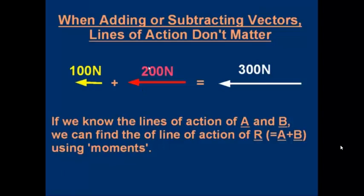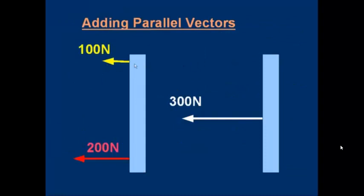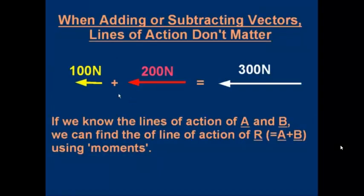Let's talk about the lines of action. If we add or subtract vectors, lines of action don't matter. In other words, 100 newtons to the left plus 200 newtons to the left is always 300 newtons to the left. The yellow force has a line of action — a horizontal line passing through the arrow, extending indefinitely left and right. The force in red at the bottom has its own line of action, and the resultant will have its own line of action. We don't say anything about lines of action when we add vectors — we just add or combine the magnitudes and work out the direction of the resultant.